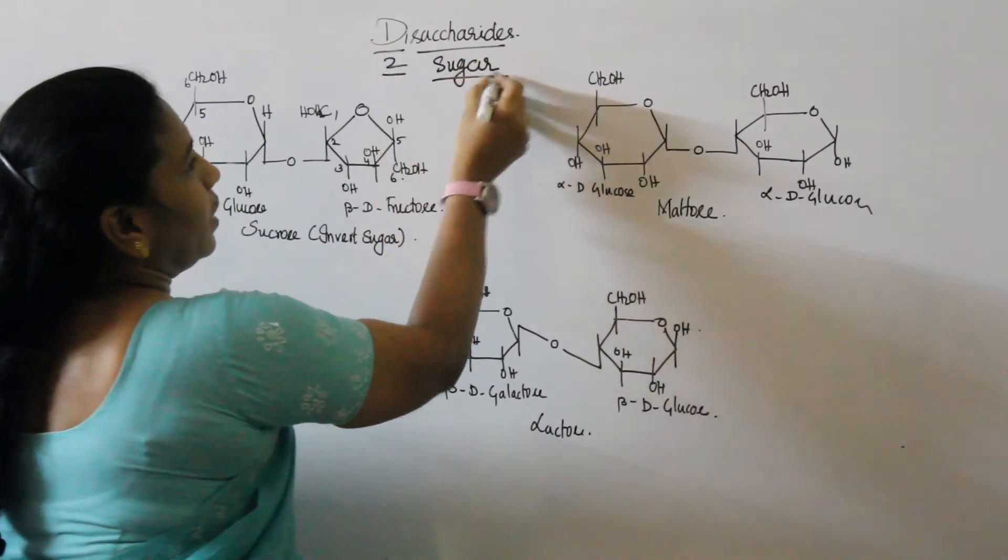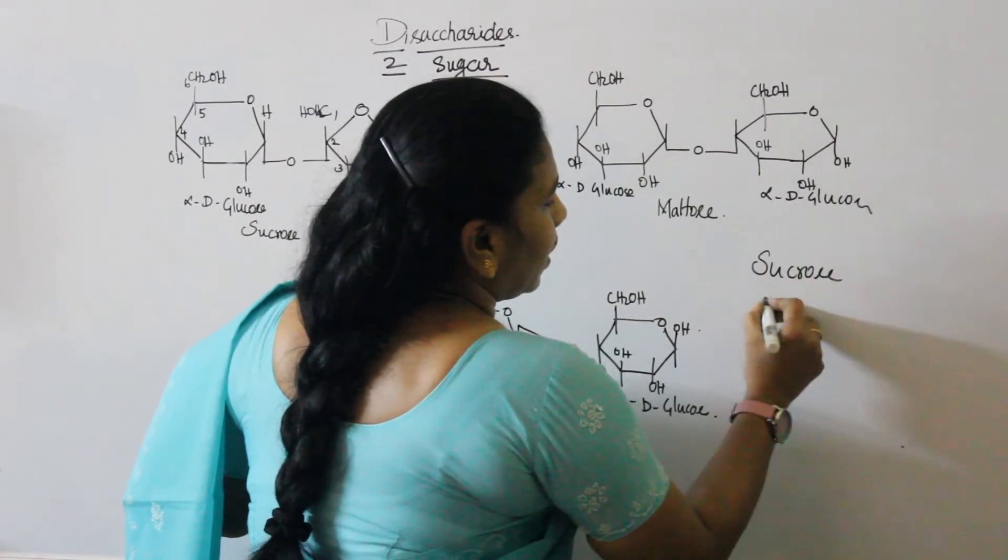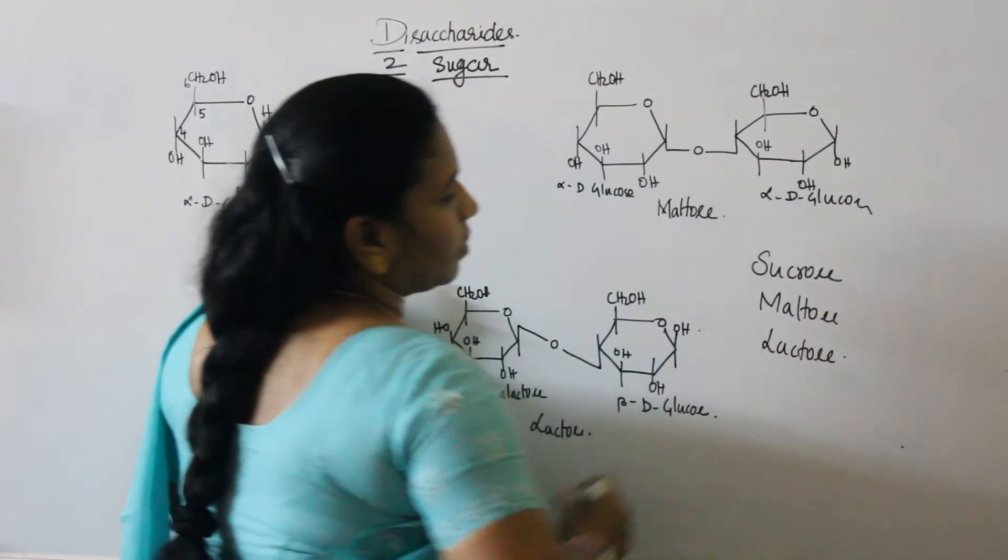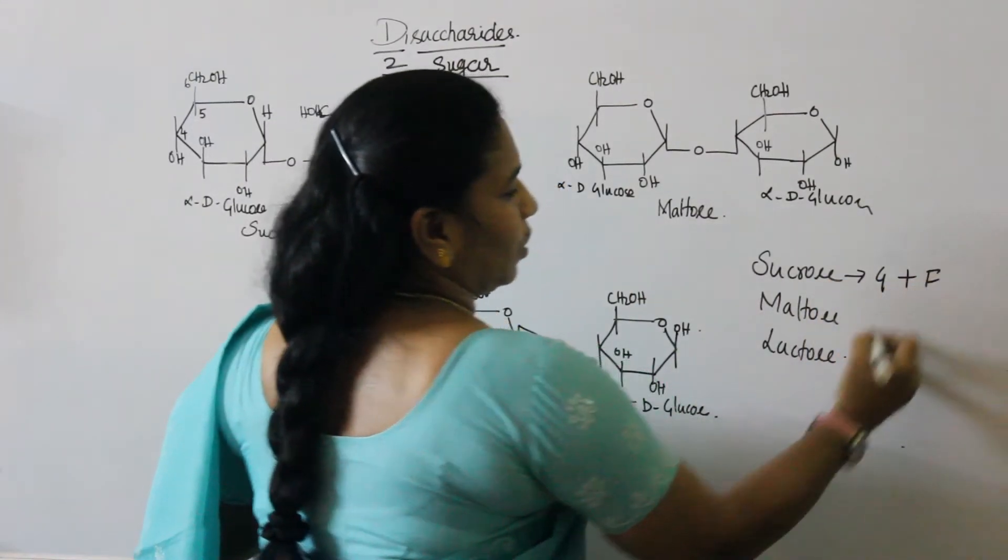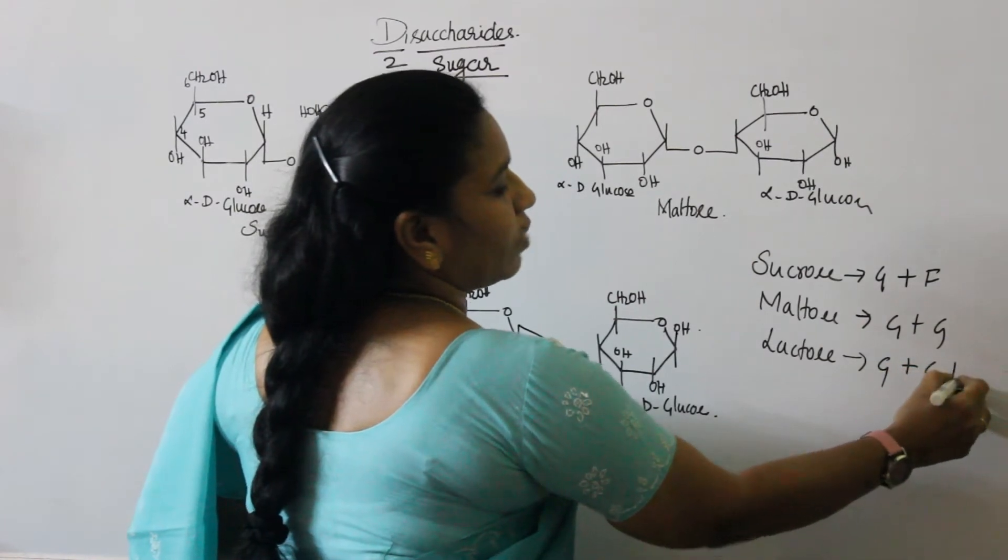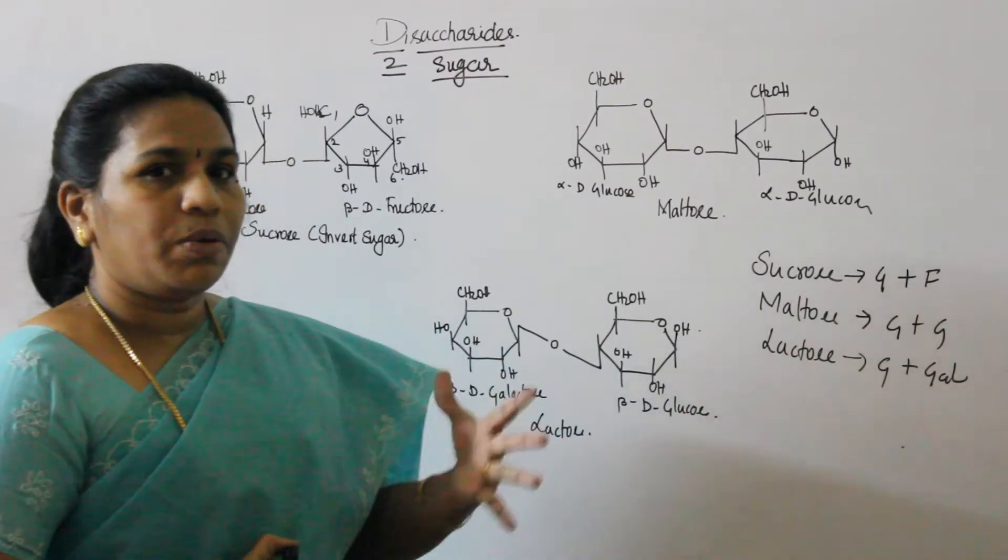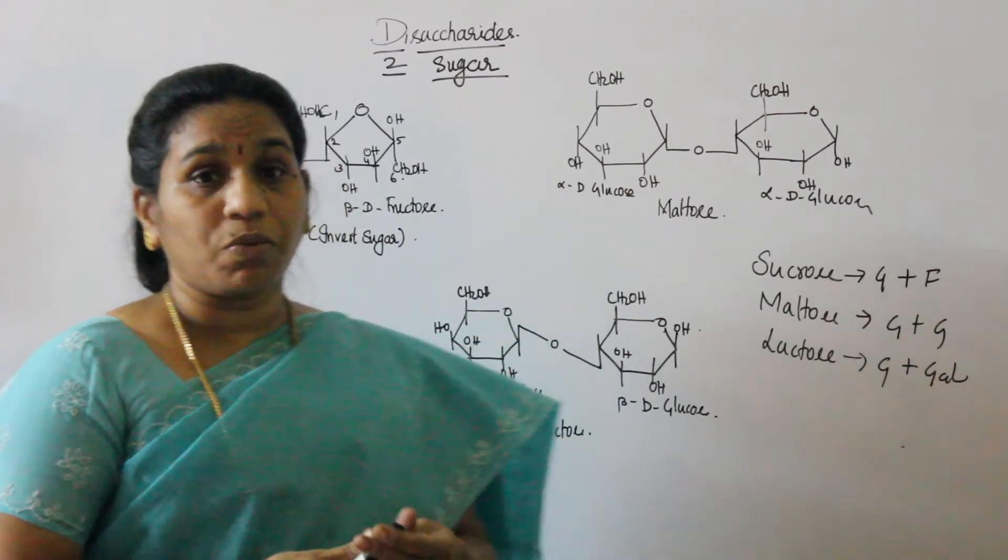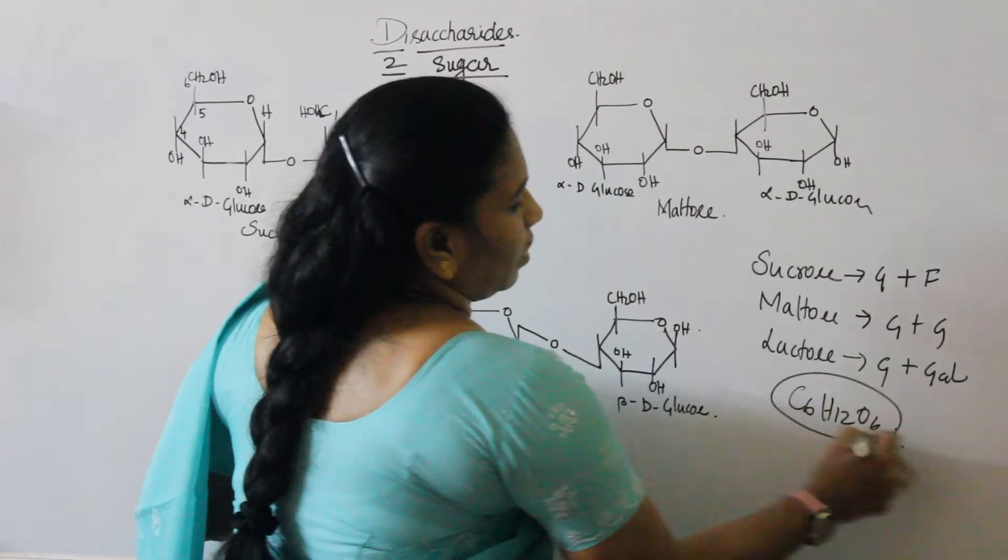One molecule of disaccharide forms when two monosaccharides combine. The examples are sucrose, maltose, and lactose. Sucrose is made of one glucose and one fructose. Maltose is two molecules of glucose. Lactose is one glucose and one galactose. The molecular formula for monosaccharides is C6H12O6.